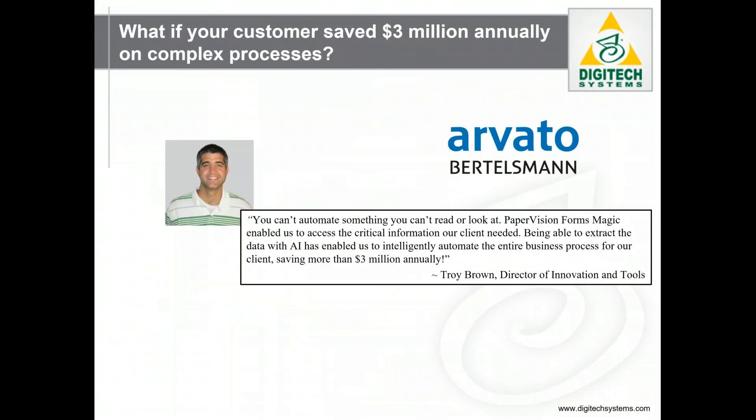Perhaps a real example will best explain. Arvado specializes in the development and implementation of custom technology solutions for more than 150 million customers around the globe. They focus on complex business problems that simply don't have easy solutions. They recently helped a large software client automate processing for more than 63,000 licensing contracts annually using our AI-driven forms processing engine, PaperVision Forms Magic. AI was needed rather than simple RPA because each licensing contract was unique — described as extremely complex and with a high degree of variability, too tough for a standard OCR-driven processing engine to handle.